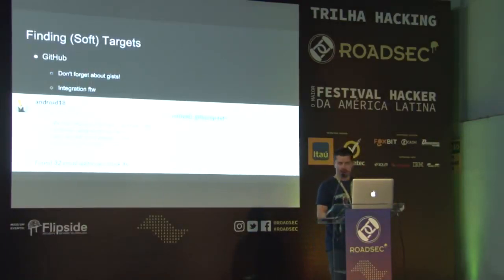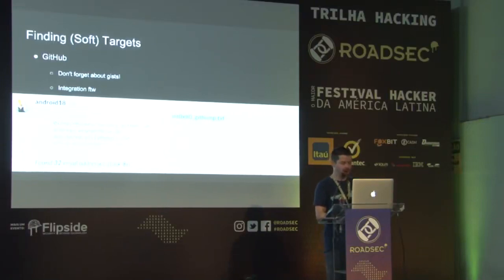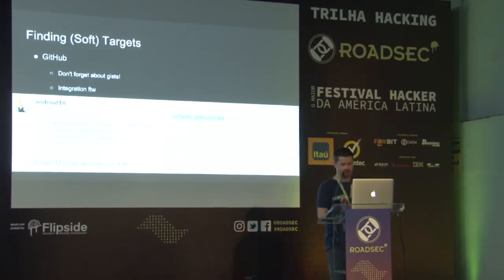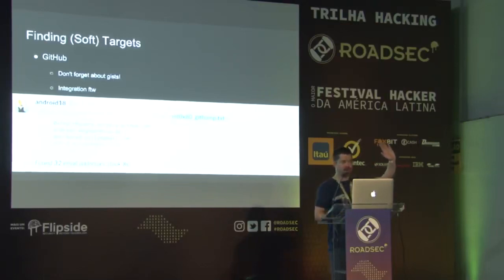Another win here is tying GitHub into whatever automation you might have in place. On my red team we have a Slack bot, and we wired up GitHub to the Slack bot. In Slack I can just say 'bang GitHub int80' and it will go and get me all the people it can find — I don't even have to run the tool myself. Also, gists are awesome. If you just have a code snippet that you post up quickly, there are lots of cool details you can find in gists. We'll come back to that later.